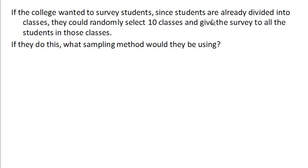Now suppose a college wanted to survey students. Since students are already divided up into classes, they just randomly select ten classes and give the survey to all the students in each of those ten classes. This is a sampling method called cluster sampling.